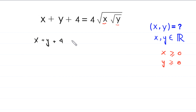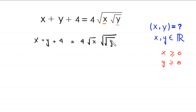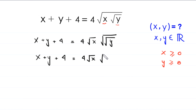This equation can be written as x plus y plus 4 is equal to 4 times square root of x times the square root of the square root of y, which is the same as the fourth root of y.